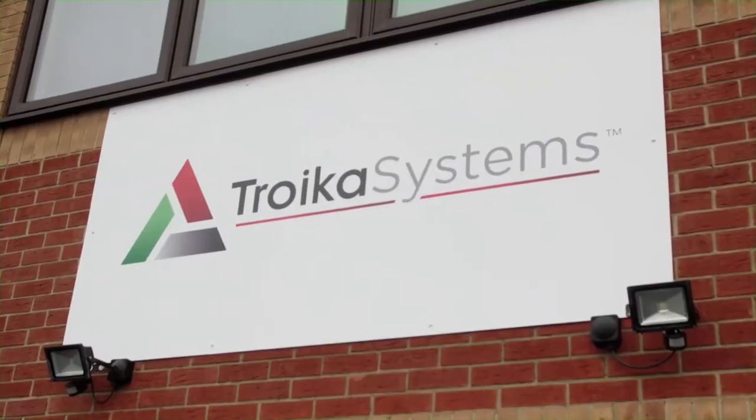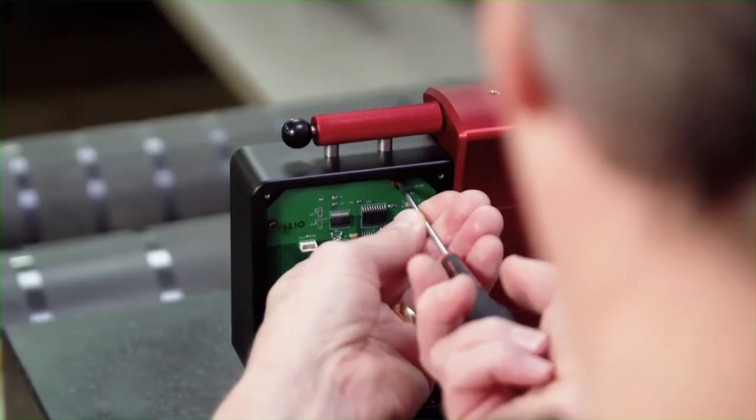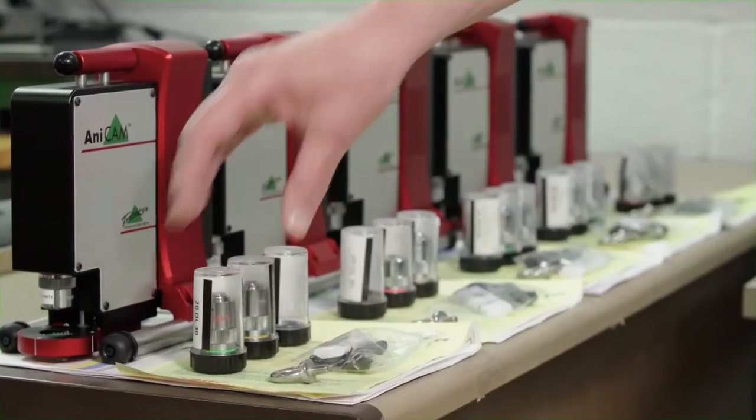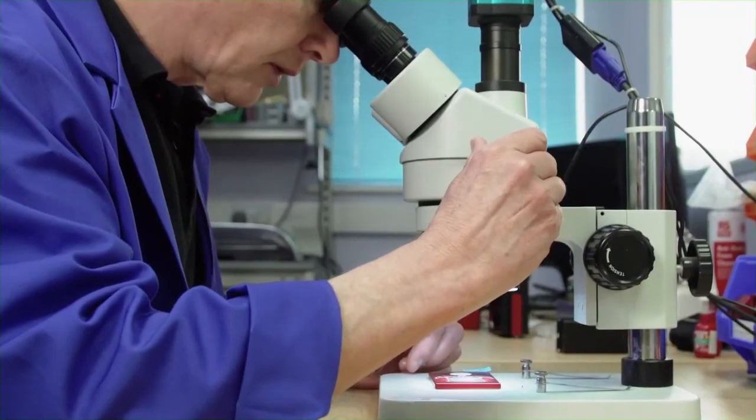For 25 years Troika Systems, located in the UK, have been leading the way in the development and manufacture of 2D and 3D scanning microscopes for the print and related industries.